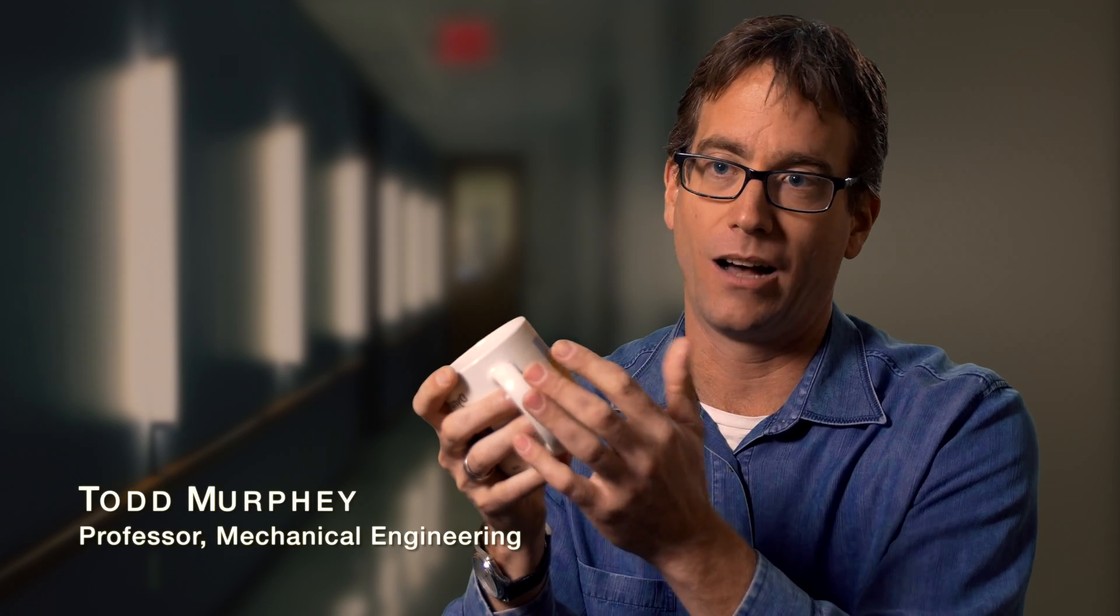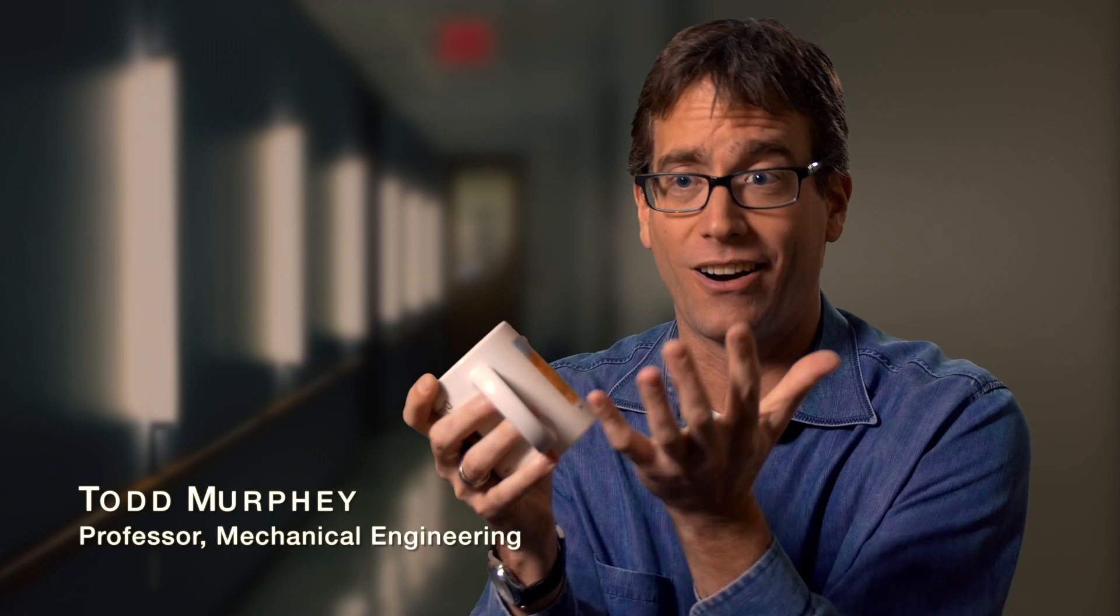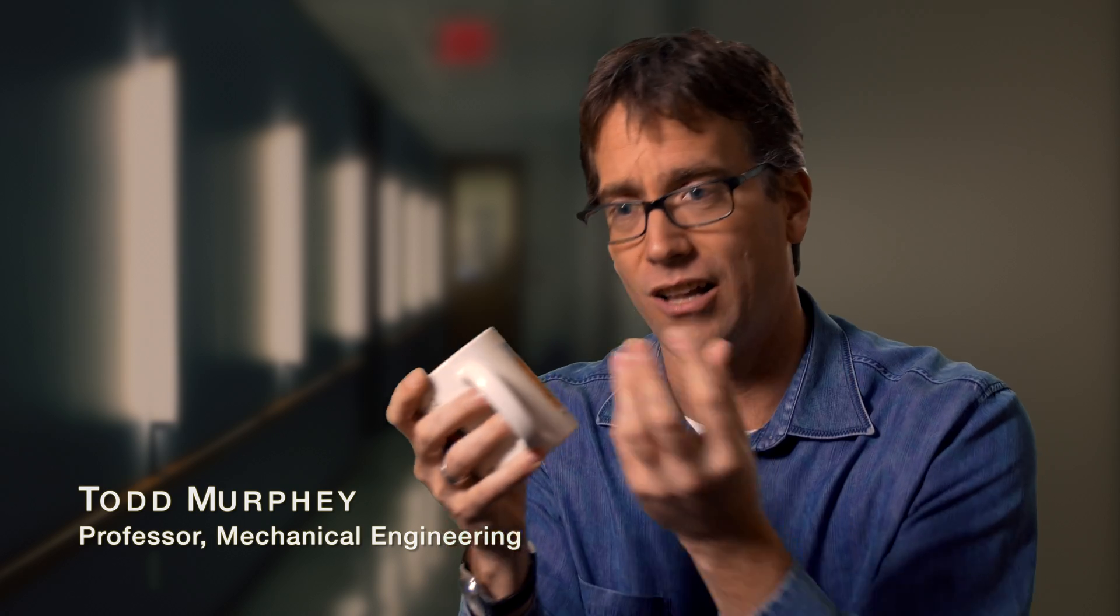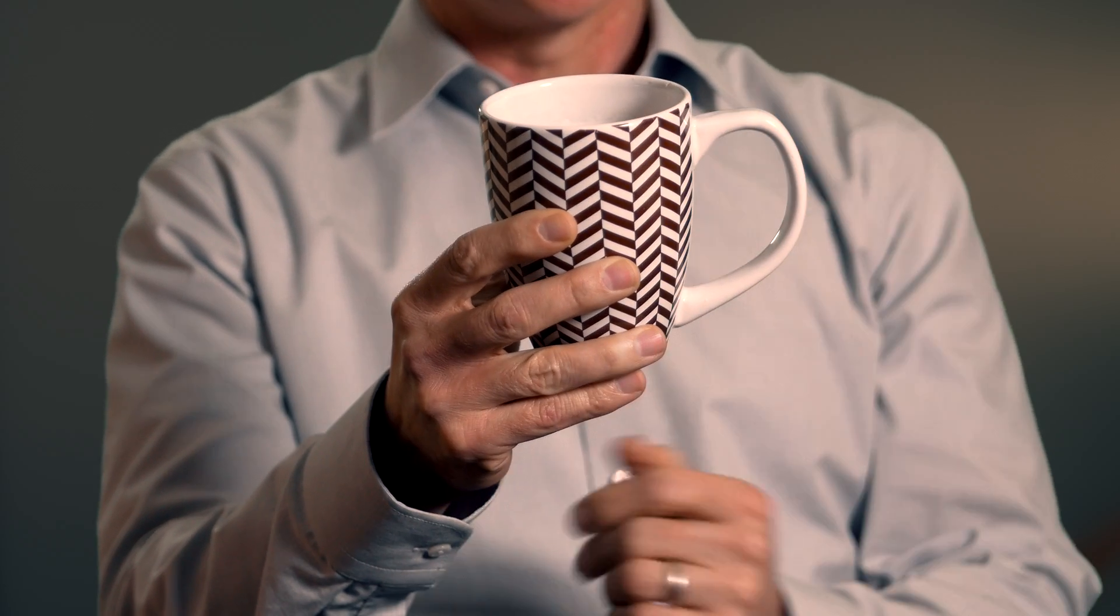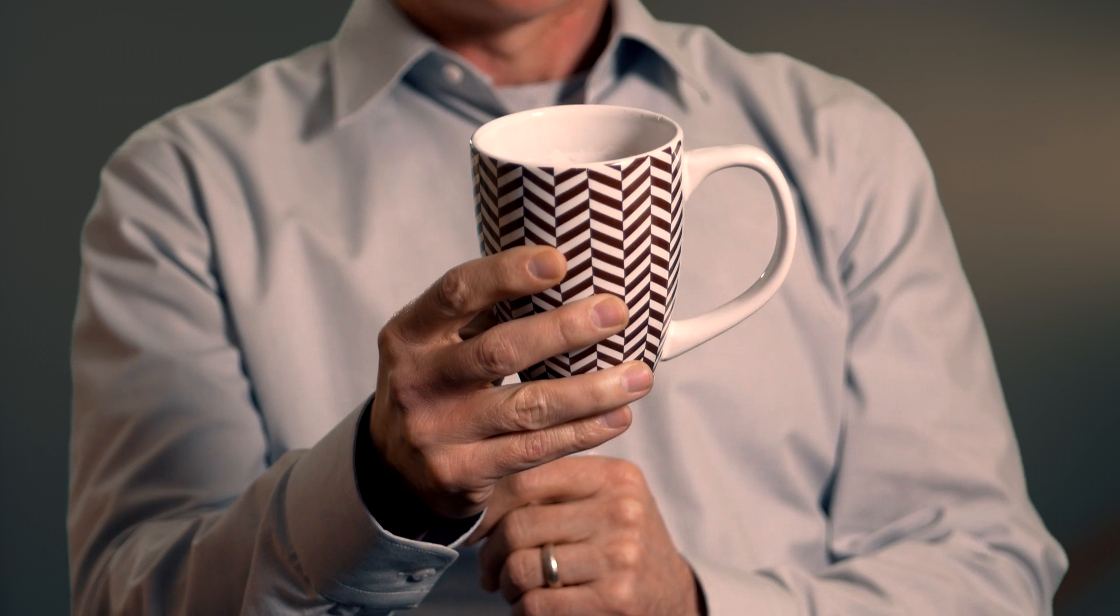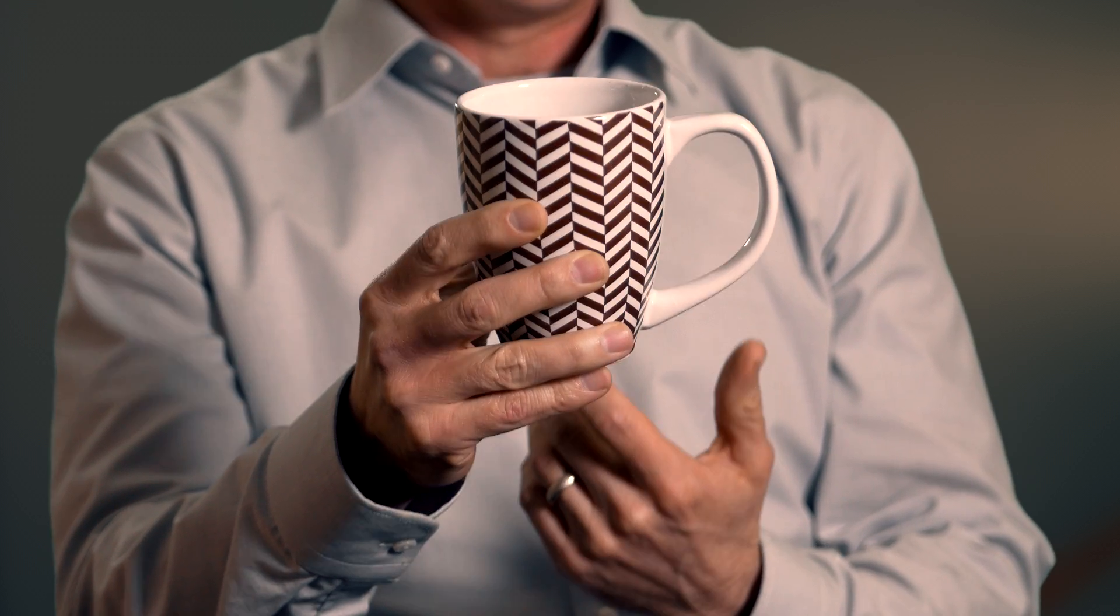When I use my hands to pick something up, information about that object is distributed across my entire hand and I'm synthesizing all of that information into one coherent picture of what's happening with the mug. I'm holding this nice and stably. I have great confidence in my ability to do that. And yet all I see is my thumb. All the fingers are hidden from my view. I know where they are. I know how they're interacting with the cup. And that's all because of touch. We do a lot of things like that where the information we're getting is from a part of our body we can't even see.